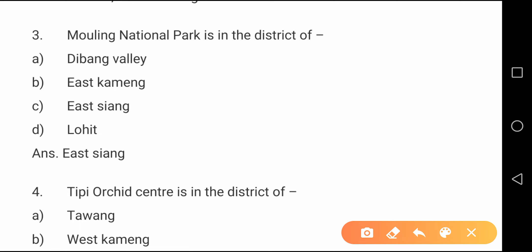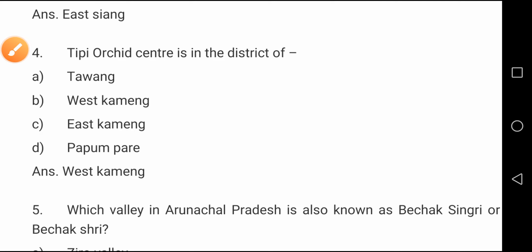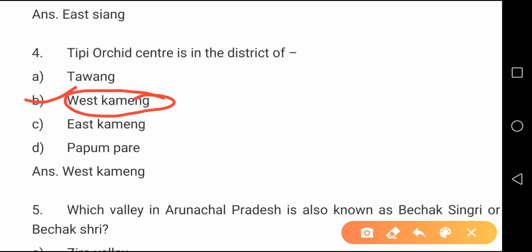Question number three: Mouling National Park is in the district of — the correct option is option C, Anjaw district. Question number four: TP Orchid Center is in the district of — the correct option is option B, West Kameng district. So TP Orchid Center is in West Kameng district, and the orchid sanctuary is in Sesa.